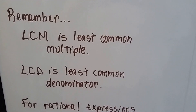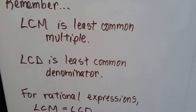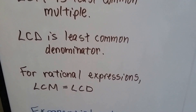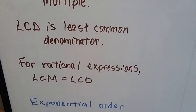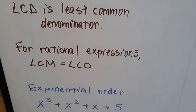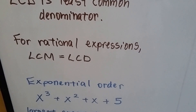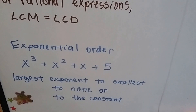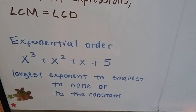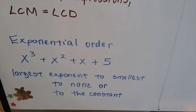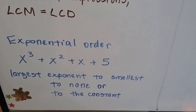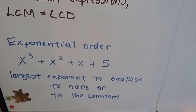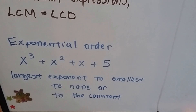Remember, the LCM is the least common multiple, the LCD is the least common denominator. When we're talking about rational expressions or equations, the LCM is the LCD — it's the same thing. Also remember that exponential order means we put the exponents in order from largest to smallest to none, going all the way to the constant number, like the 5 at the end.